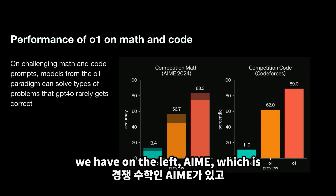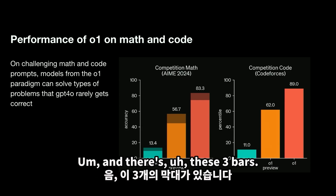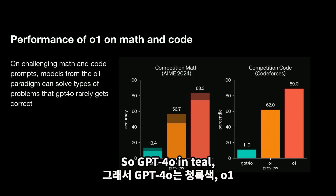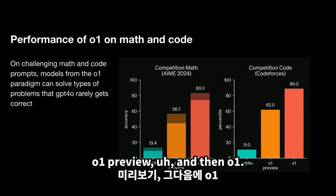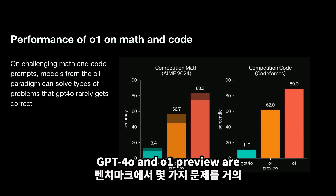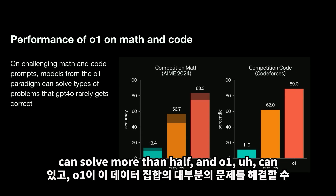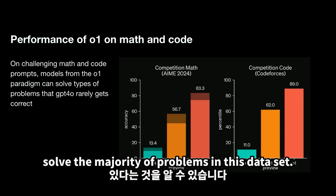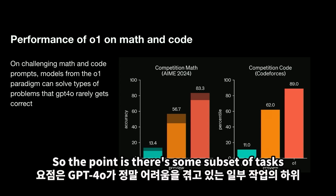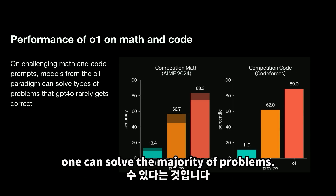You'll see in these bar charts — on the left is IMO, which is competition math, and on the right is Codeforces. There are three bars: GPT-4o, O1 preview, and O1. GPT-4o and O1 preview are barely solving a few questions in these benchmarks. O1 preview can solve more than half, and O1 can solve the majority of problems in this dataset. So the point is there's a subset of tasks where GPT-4o is really struggling, and O1 can solve the majority of problems.